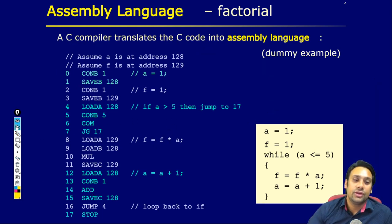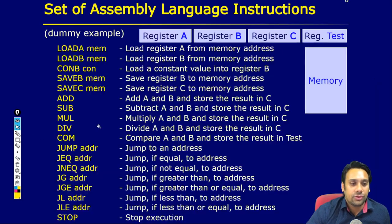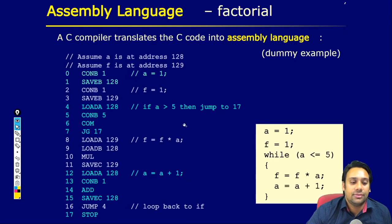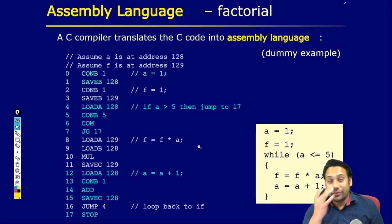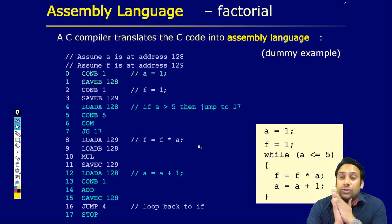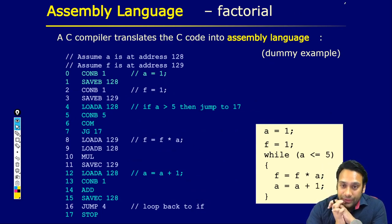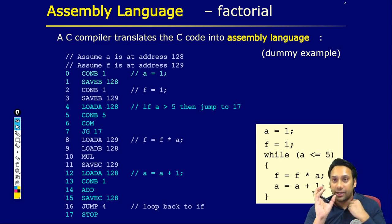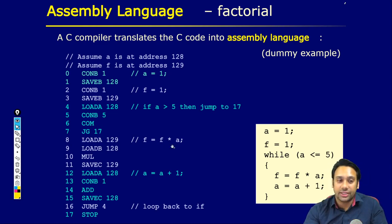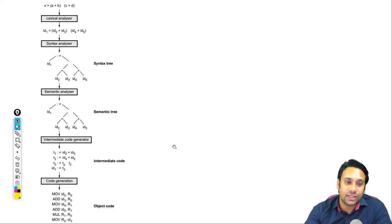Factorial of a number को आप एक recursive program भी लिख सकते हैं, you can also write a non-recursive program. This is representing the factorial of a number. This program is written in a programming language — maybe it is written in C language. ये C language का एक program है जिसको हमने एक high level language के अंदर लिखा है.